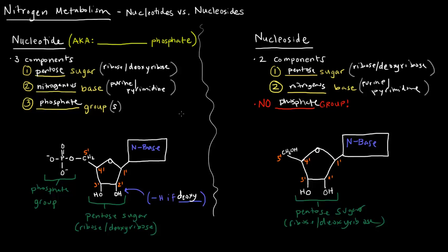That's essentially the difference between nucleoside and nucleotide. You'll also notice that sometimes nucleotides are called nucleoside phosphates, because they're nucleosides with phosphate groups. A simple way to remember is that nucleotide has the letter T in it — T for three components — and nucleoside has just one component less, so you subtract one component and you're left with a nucleoside.